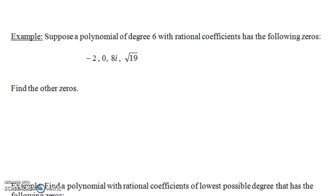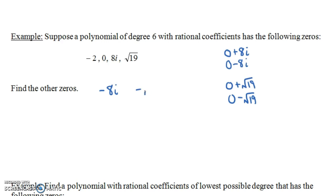Now suppose a polynomial of degree 6 with rational coefficients has the following zeros — find the other zeros. We have −2 and 0, but then we have 8i. We can think of 8i as 0+8i, so its conjugate is 0−8i, or just −8i. And what about √19? We can think of this as 0+√19, so its conjugate would be 0−√19, which is −√19. So −8i and −√19 are the other two zeros, giving us all six total.